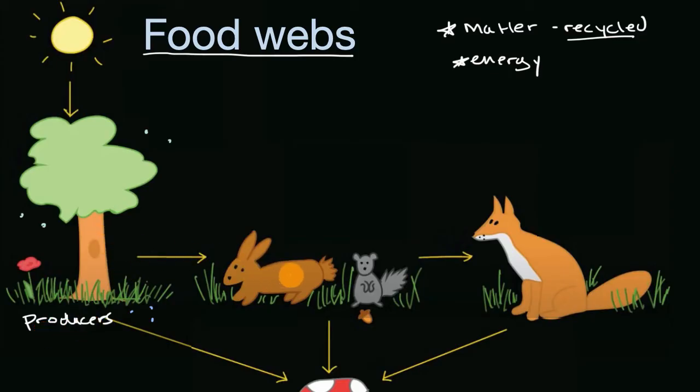But then we have things like this bunny, and this bunny is not able to harness energy from the sun by itself. In order for it to get its energy and its matter, it needs to eat one of these producers, probably some of this grass. And so we would call this bunny right over here, this rabbit, we would call it a consumer.